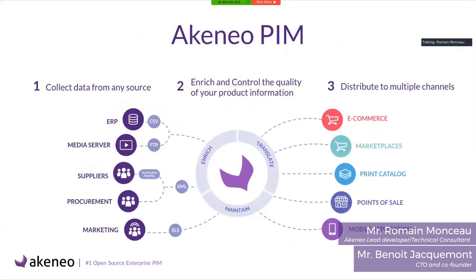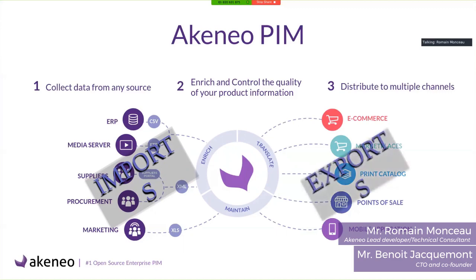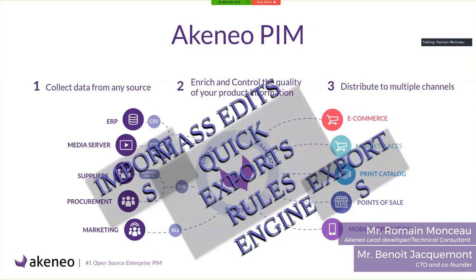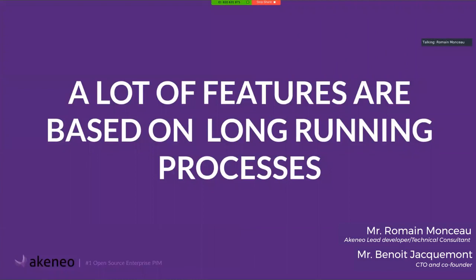When you are using a PIM, it is usually connected with a lot of other systems. In the input you may have ERP, media server, suppliers. In the middle you do all your enrichment, translation, and maintenance of products. Then you send your data to multiple channels. This means there are a lot of features linked to long-running processes — for example to import data, to export data, and to do mass edits or quick exports.